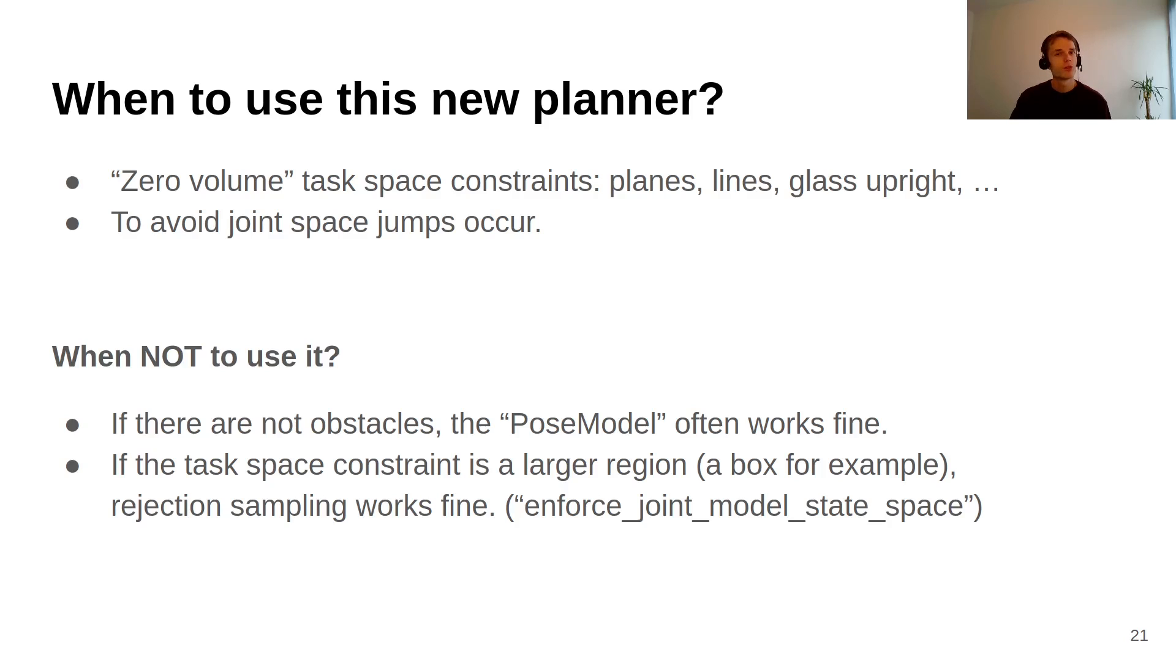Then when not to use it. If there are no obstacles in your environment, often the other approaches for Cartesian space planning will work fine, like the pose model. But even if you don't have obstacles, MoveIt Servo, just real-time jogging the arm to a location, will work probably, or the new Pilz planner hopefully in the future. Then if you have Cartesian constraints that are a very large box for example in Cartesian space, rejection sampling can work fine and you don't necessarily need this projection step. You can use the currently existing option enforce_joint_model_state_space and then you will plan in joint space with rejection sampling. But for all the other problems, the new planner is recommended.